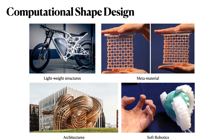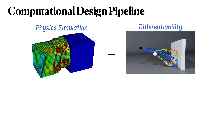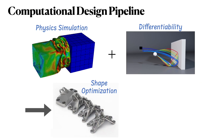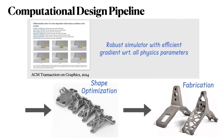Computational shape design has wide applications, including mechanical structures, metamaterials, architectures, and soft robotics. A traditional pipeline starts from physics simulations and its differentiability. We can then run optimizations to minimize certain objectives, and the optimized shape is then fabricated. My thesis explores how we can improve each part of this pipeline.